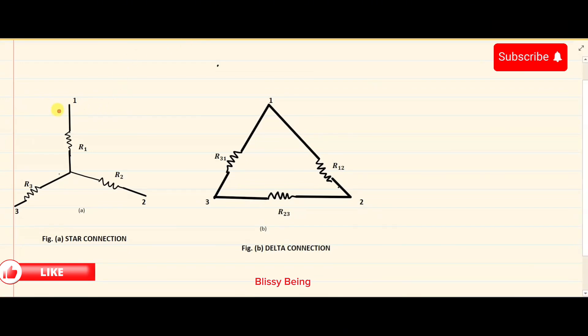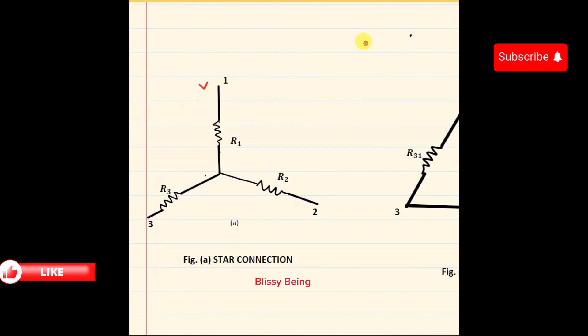Let's look at the star connection, referred to as figure A. In this setup, we have three resistors R1, R2, R3, and the terminals are 1, 2, 3, with a terminal that is common to all three branches.